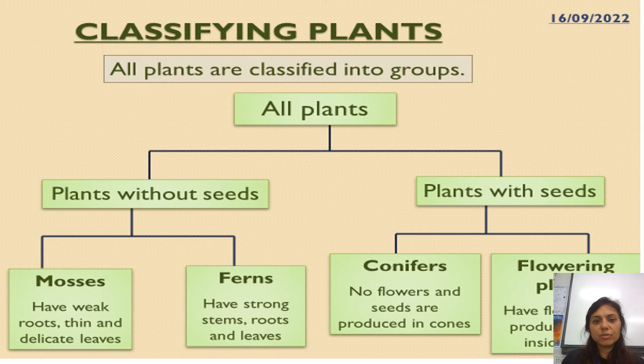Ferns have strong stems, roots, and leaves, so they are quite firm in the ground. The stems are quite strong, as well as the leaves.